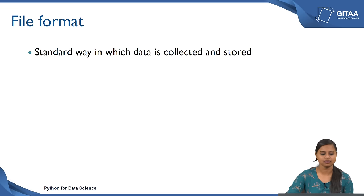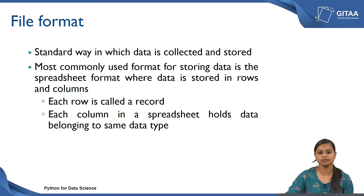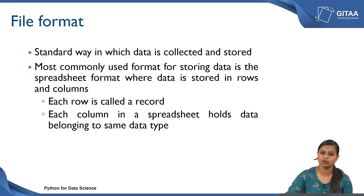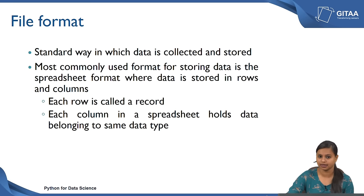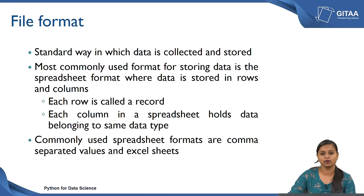Now we will see what is the format of a file. It is just a standard way in which the data is collected and stored. The most commonly used format for storing data is the spreadsheet format, where the data will be stored in rows and columns. Each row will be called a record or a sample, and each column will be represented as a variable. Each column in a spreadsheet holds data belonging to the same data type. The commonly used spreadsheet formats are comma separated values and Excel sheets.